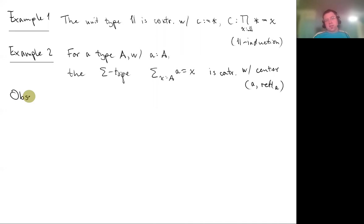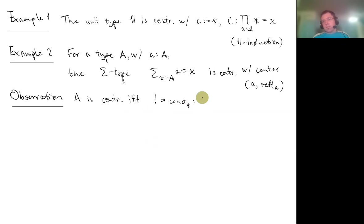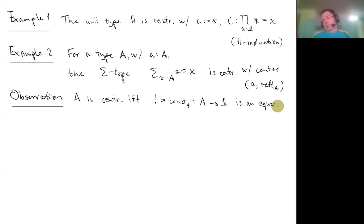An observation: A is contractible if and only if the uniquely-defined map from A to the unit type — the constant map at star — is an equivalence. This is the map you always have from any type to the unit, so we could talk about contractible types just by having a definition of equivalence.